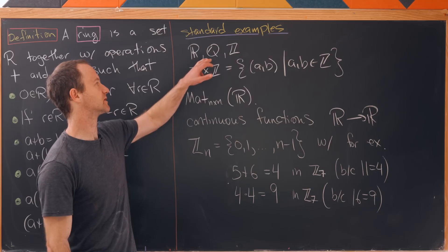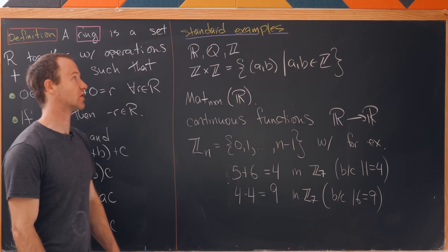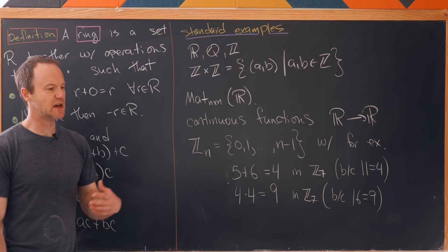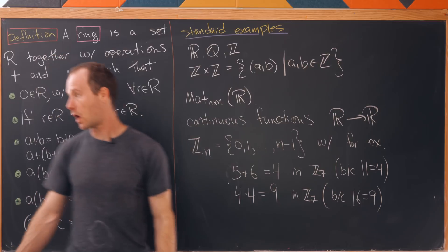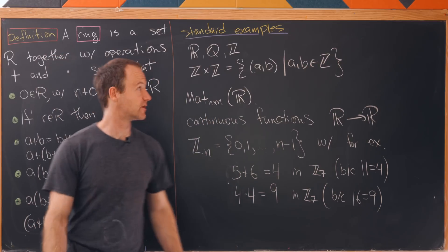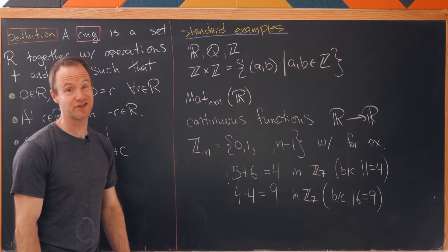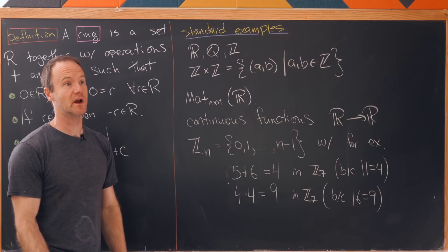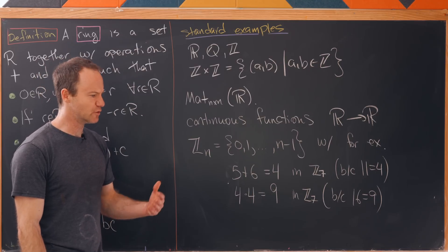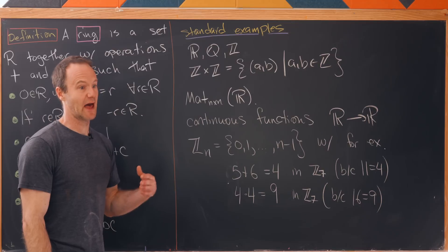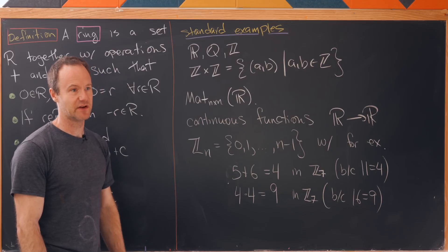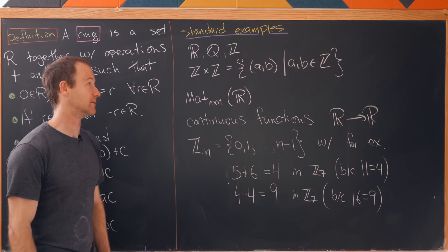So let's notice the real numbers, the rational numbers, and the integers are all standard examples. In fact we knew all of these things about the real numbers, the rational numbers, and the integers way before we knew what a ring was. You learn things like the additive identity and additive inverses way back in elementary school.